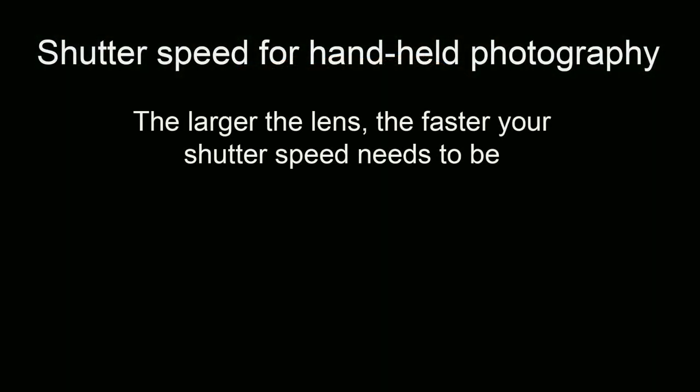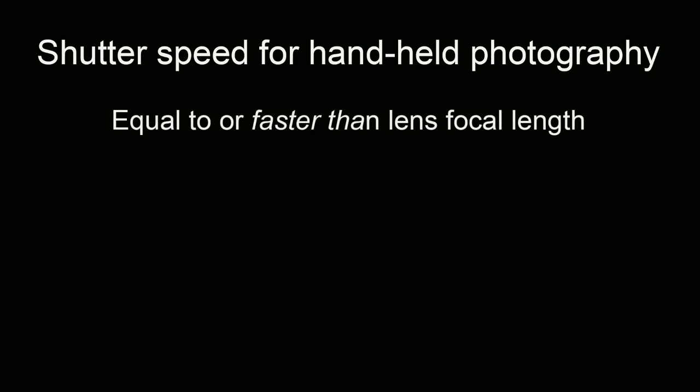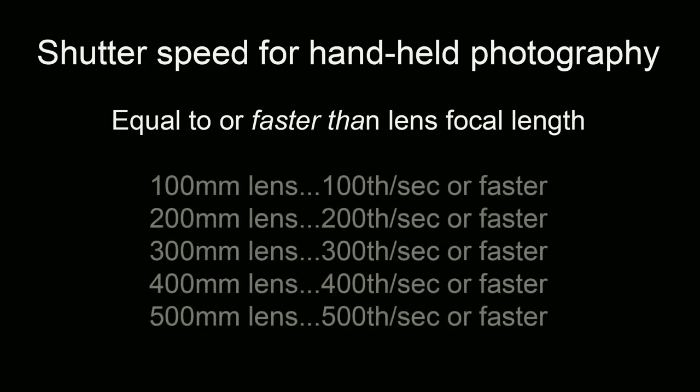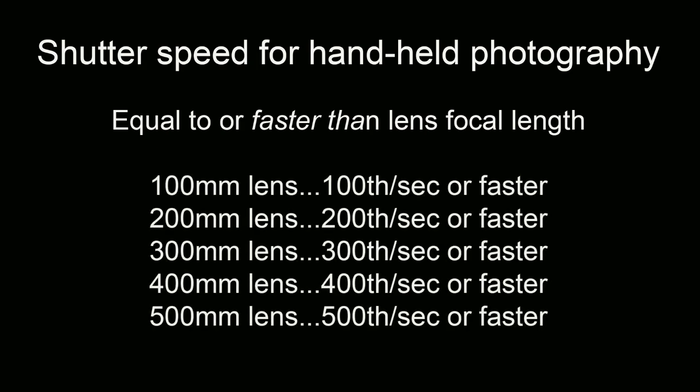The bigger your lens gets, or the more you magnify the subject, the faster your shutter speed needs to be. A common rule of thumb that's easy to remember is that your shutter speed should be equal to or faster than the focal length number of the lens. If that sounds a bit technical it's easier to see it in practical terms. If you're shooting with a 100mm lens your shutter speed should be above 1/100th of a second. With a 200mm lens the shutter speed should be above 1/200th of a second. A 300mm lens, 1/300th of a second, and so on.